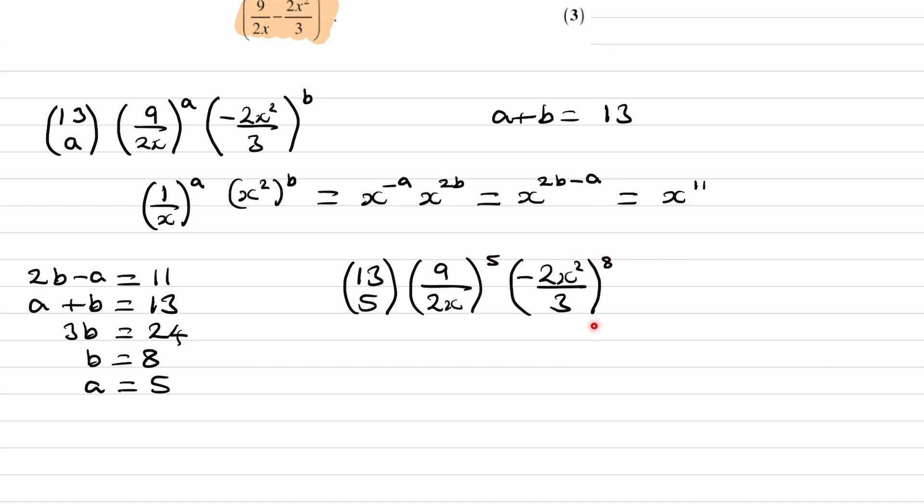So yes, this will give us x to the power of 11. We want the coefficient. So we want the number that's in front of that x to the power of 11. So before we ignored the numbers, just considered the x. Now we're going to ignore the x's and just consider the number.